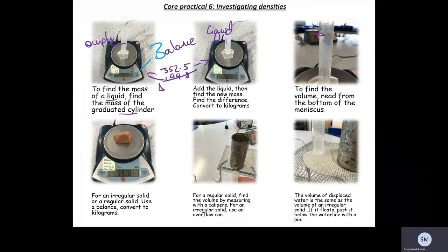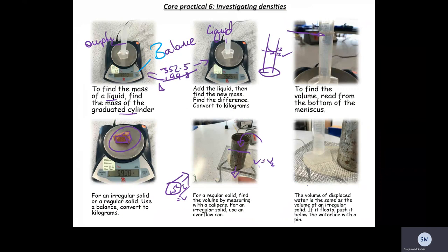To find the volume of a liquid, read from the bottom of the meniscus. The meniscus is where the water curves in the graduated cylinder — always read from the bottom of that curve. For a regular solid, find the mass using a balance and convert to kilograms. Find the volume by measuring with calipers: for a cuboid, multiply width × height × length. For an irregular solid, use an overflow can: fill it to its highest point, submerge the object, and collect the displaced water — its volume equals the object's volume. If the object floats, push it below the waterline with a pen.